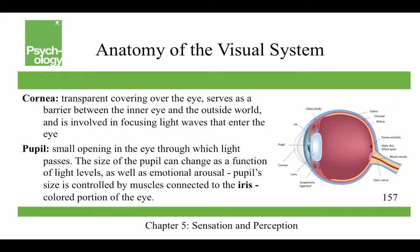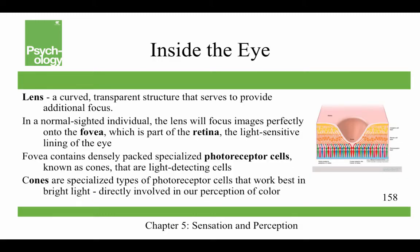The pupil's size is controlled by muscles connected to the iris, which is the colored portion of the eye. After passing through the pupil, light crosses the lens — a curved transparent structure that provides additional focus. In a normal-sighted individual, the lens will focus images perfectly onto the fovea, a small indentation at the back of the eye, which is part of the retina, the light-sensitive lining of the eye.